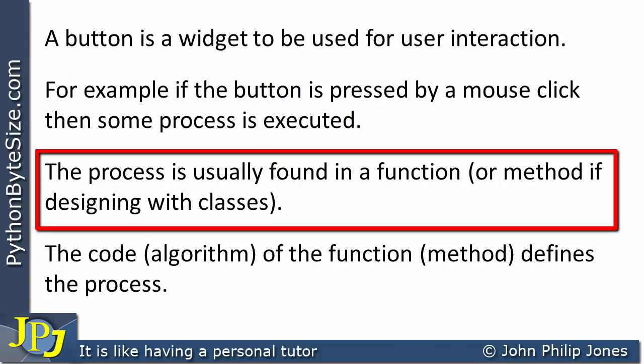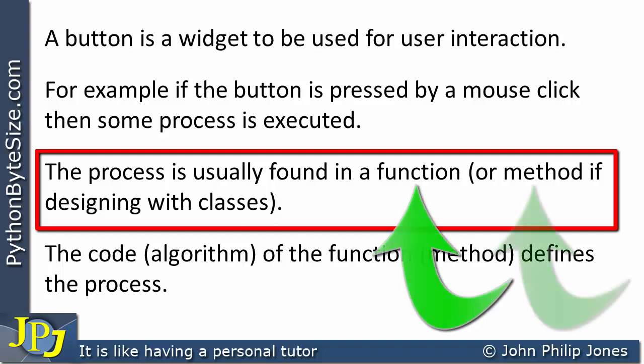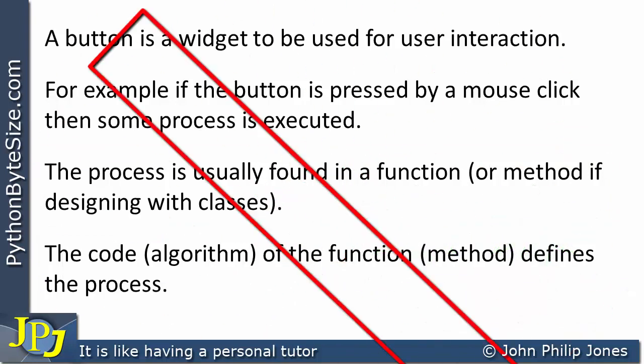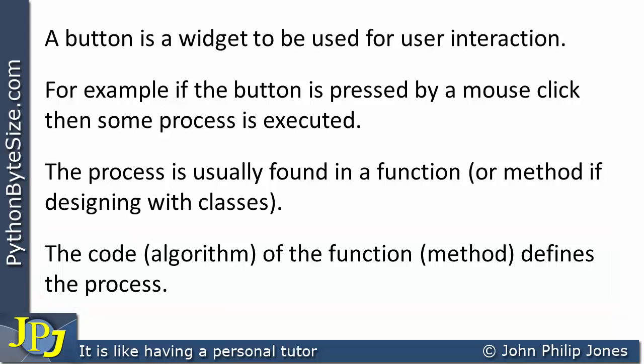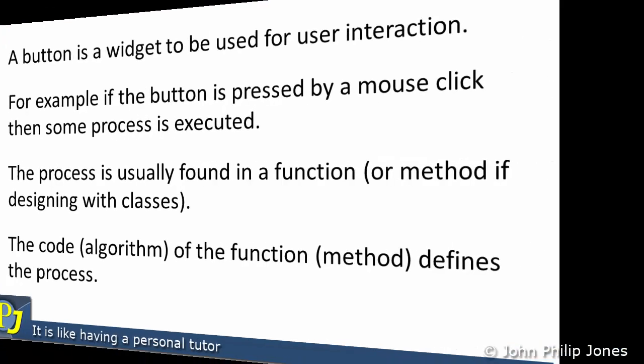The process to be executed is usually found in a function or a method if designing with classes. The code that is the algorithm of the function or method defines the process. In other words, when we click a button it can fire off a piece of code found in the function or method, and the complexity of that function or method can be very straightforward or it can be a complex function that needs to be carried out by the computer program.